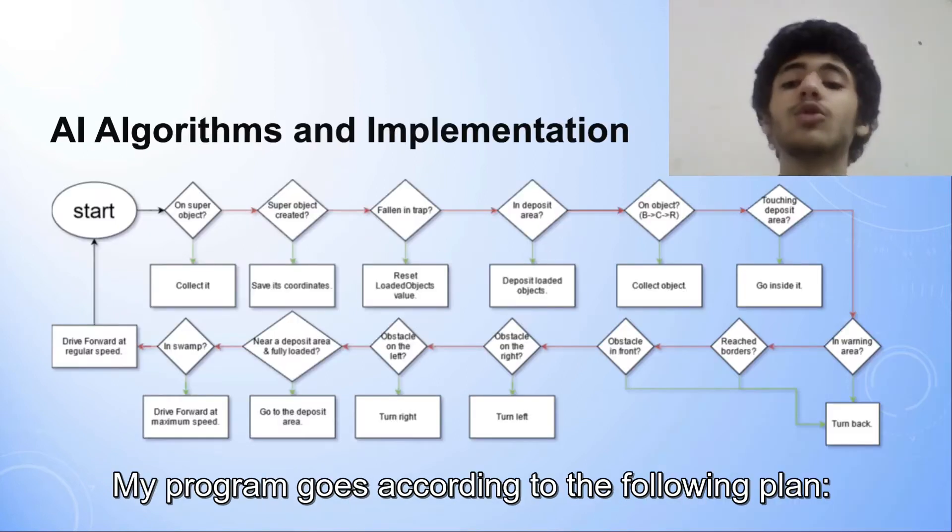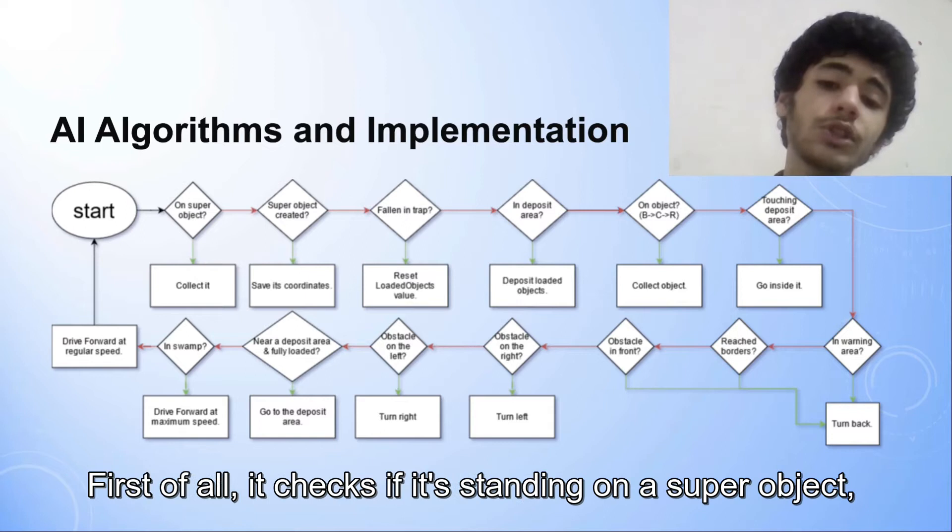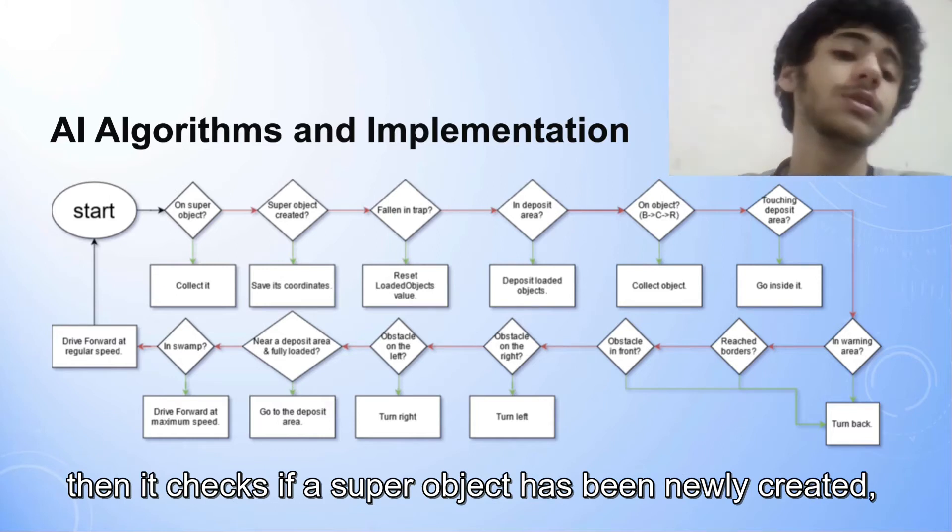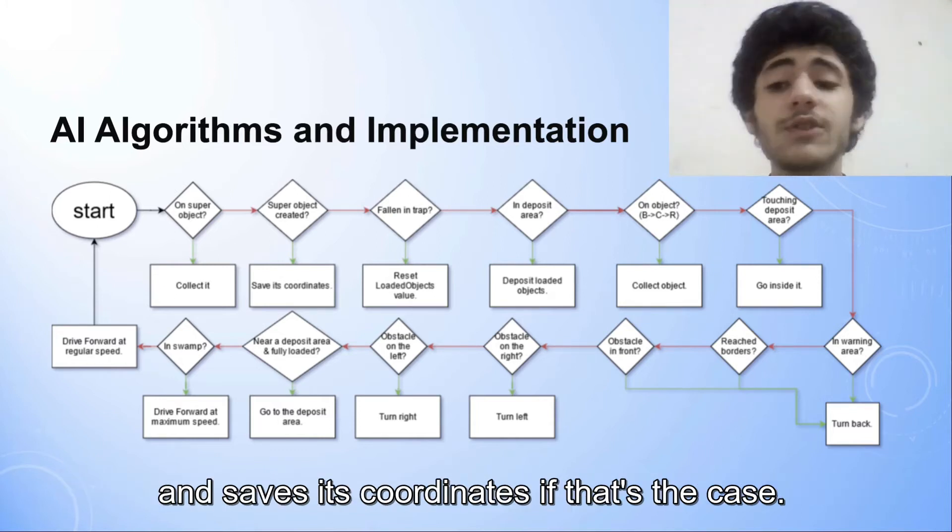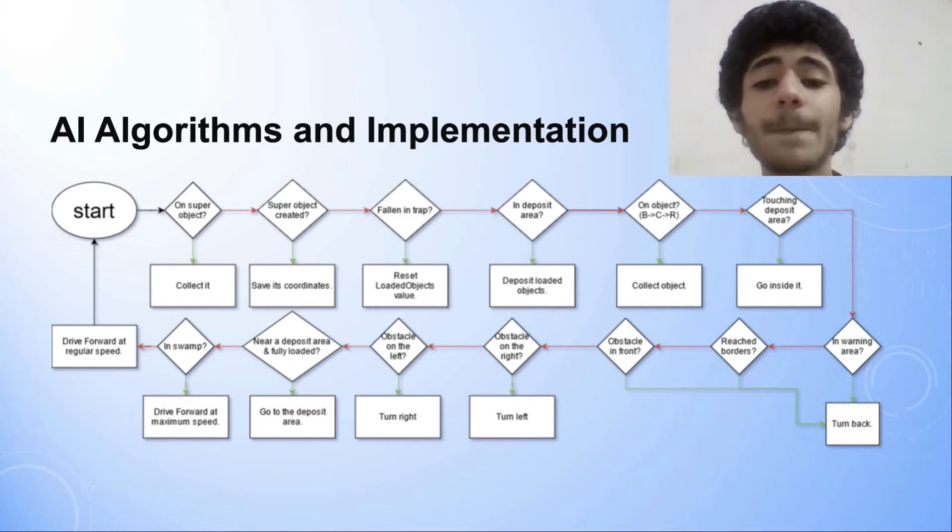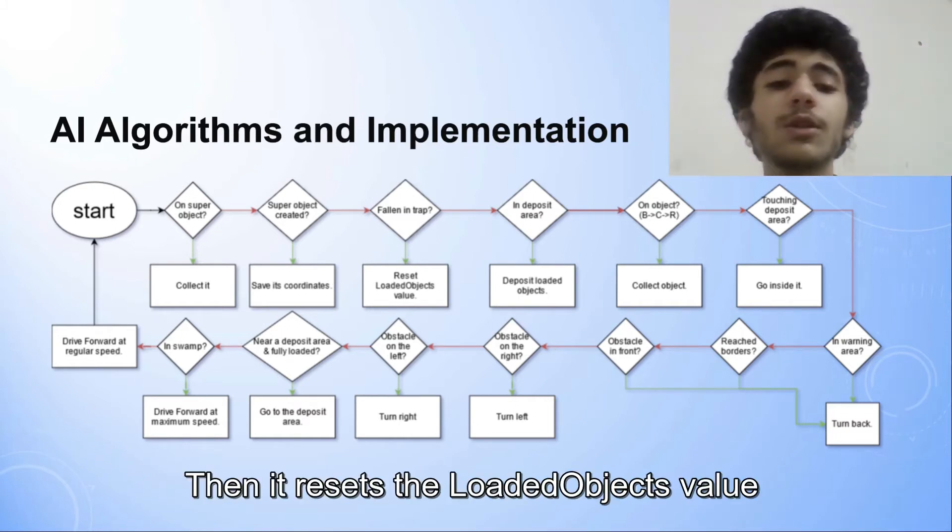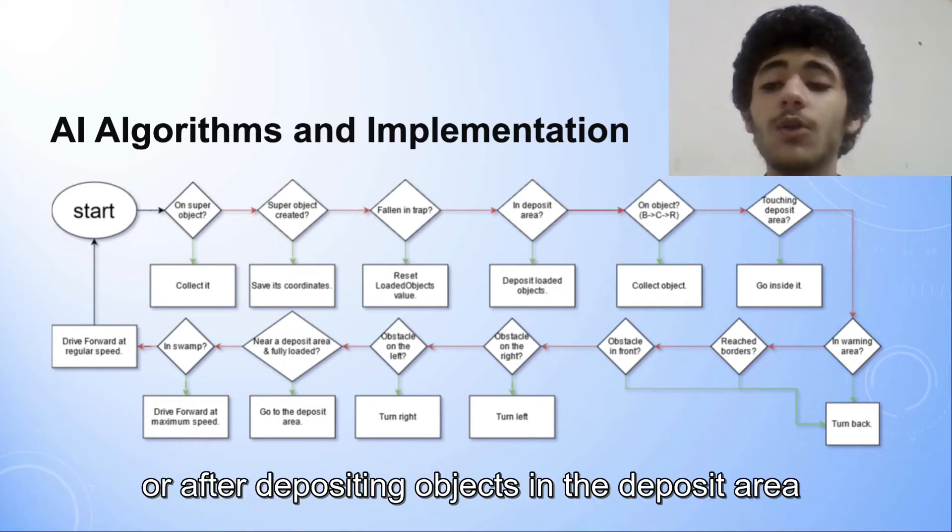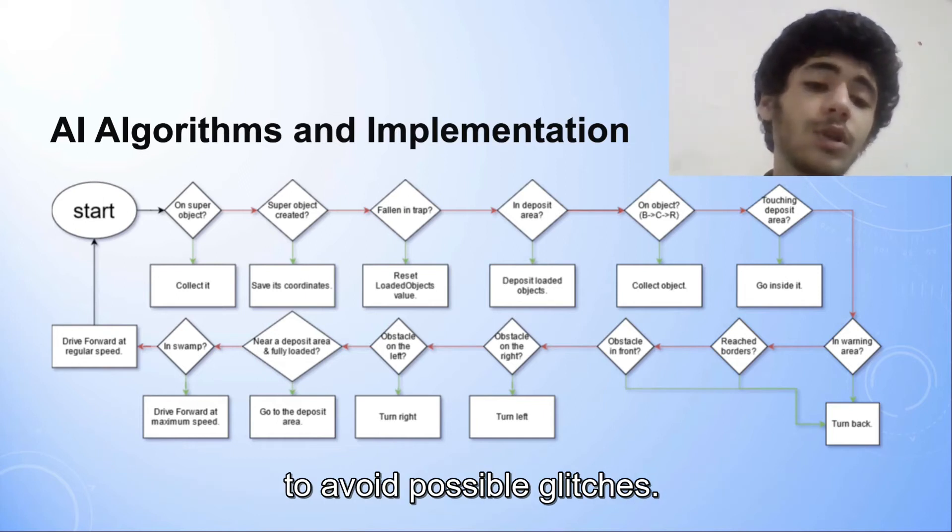My program goes according to the following plan. First of all, it checks if it's standing on a super object and collects it, in case that's true. Then it checks if a super object has been newly created and saves its coordinate, if that's the case. Then it resets the loaded object's value when it's in the trap or after depositing objects in the deposit area, to avoid possible glitches.